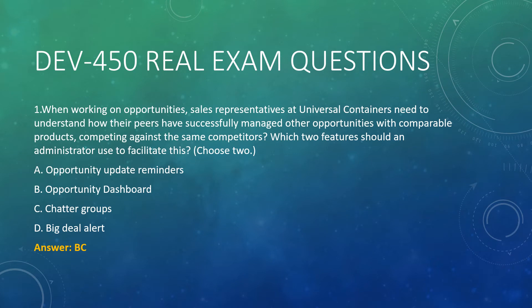Question 1. When working on opportunities, sales representatives at Universal Containers need to understand how their peers have successfully managed other opportunities with comparable products, competing against the same competitors. Which two features should an administrator use to facilitate this? Choose two. A. Opportunity Update Reminders. B. Opportunity Dashboard. C. Chatter Groups. D. Big Deal Alert. Answer: B, C.